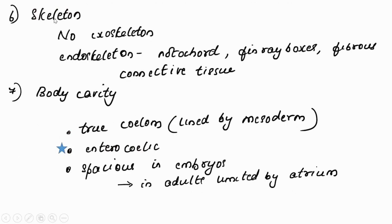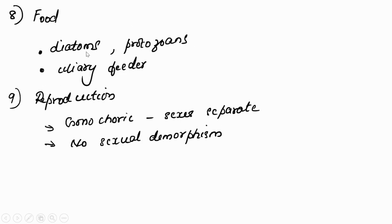Regarding skeleton: exoskeleton is absent. Endoskeleton structures include the notochord, fin rays, and fibrous connective tissue. Regarding body cavity: a true coelom is present, of the enterocoelic type, as already explained. The coelom is spacious in embryos but becomes limited by the atrium towards the anterior end in the adult. Food consists of small aquatic organisms and protozoans; Amphioxus is a ciliary feeder.